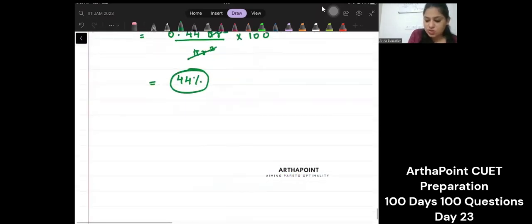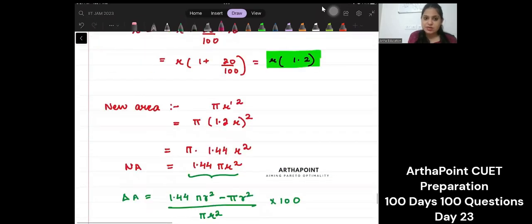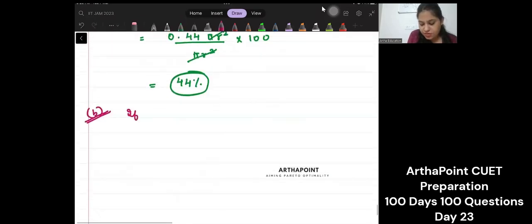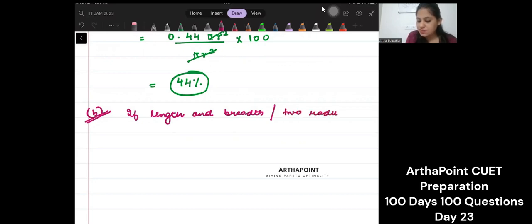Now, I am going to give you another question similar way. Just try to do this yourself. For example, let's say that the question is very similar. But now, they have said that if length and breadth – either they say length and breadth or they say the two radius of the ellipse are doubled.